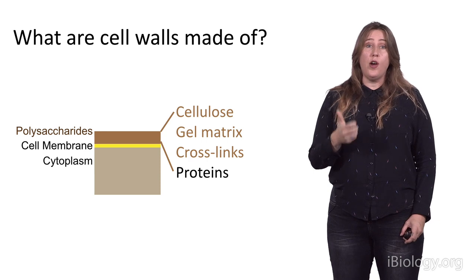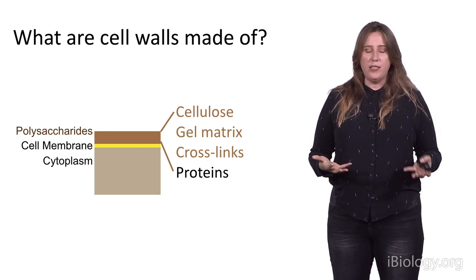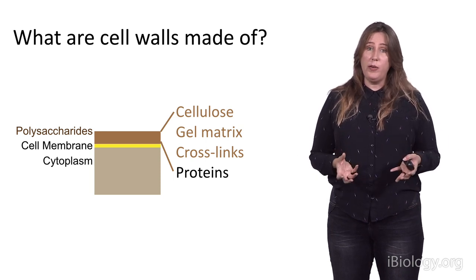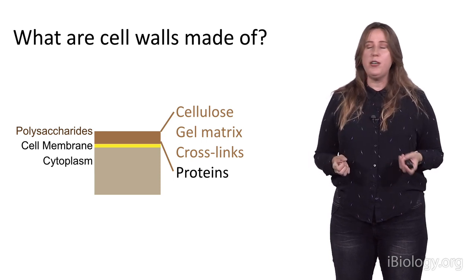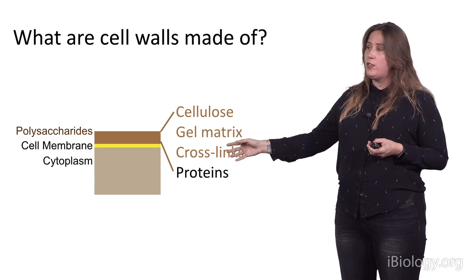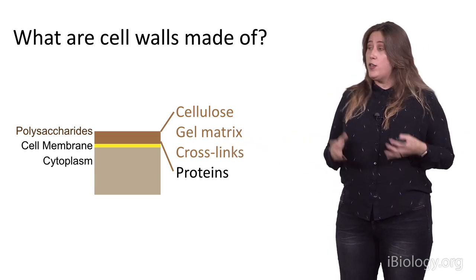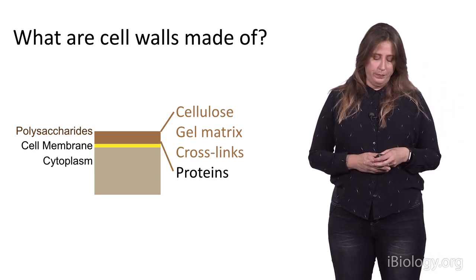You have cellulose, which are the strong fibers, as we'll see, that sort of connect the cell wall and give it its strength. Those are embedded within a gel matrix, which will be the second component we talk about. And there's some cross-linking, both between the gel matrix and the fibers, by the cross-links that I mentioned here. And all three of these components are polysaccharides. So, again, they're based in sugars. There are some proteins there as well, although we're not going to talk about those today.